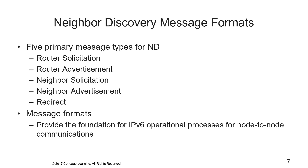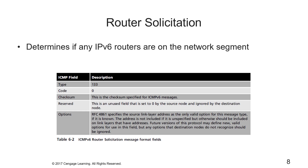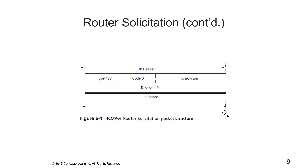For router solicitation: when a host interface initializes, it may not wait for the next router advertisement message. Instead, it might send a router solicitation message to determine if any IPv6 routers are on a network segment, and if so, to learn the network prefix and other parameters relating to address auto-configuration. The table describes the ICMP field and description for router solicitation message format fields, and Figure 6-1 shows the packet structure.